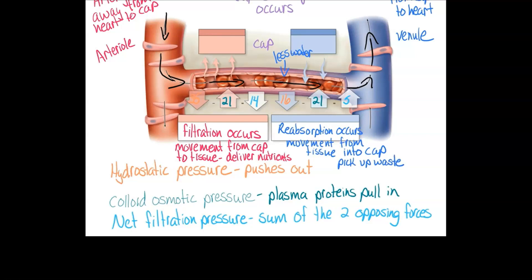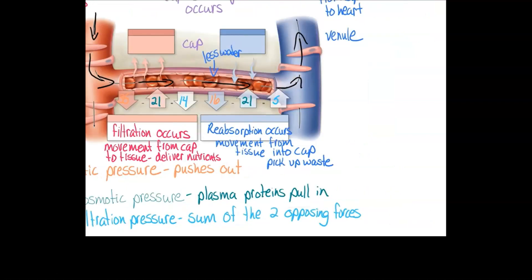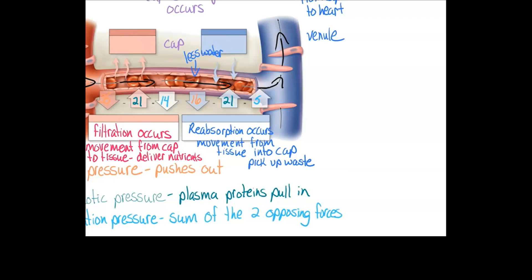Something you may notice if you compare those two net filtration pressures. At the arterial end, we had 14 out. At the venous end, we have 5 in. This doesn't quite add up. There's 9 missing.